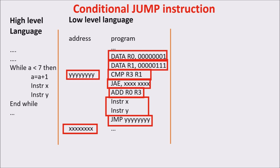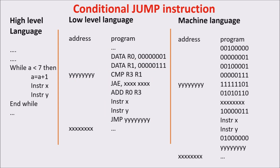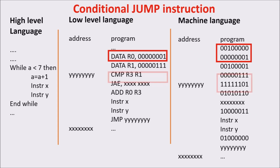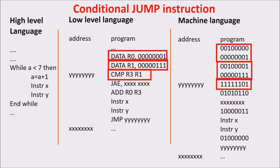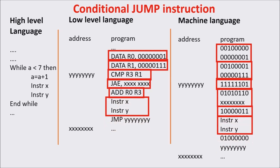As we learned in previous videos, we can write the corresponding machine language. The first data instruction takes two bytes: one for the instruction and the other for the data — the number 1 in this case. Here is the second data instruction for the number 7, then the compare of R3 and R1, and the conditional jump which also takes two bytes. Then we have the add instruction which adds R0 to R3 and puts the result in R3, followed by instructions X and Y, and at the end an unconditional jump — which also takes two bytes — with the last byte being the address to which we jump, where the compare instruction is.